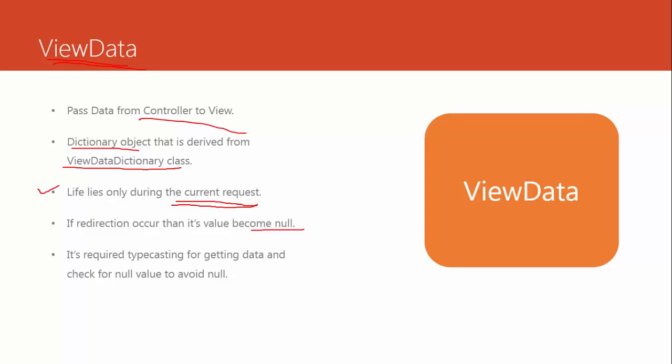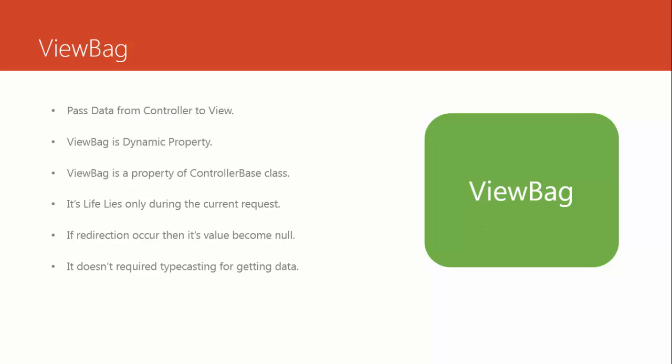Another important point about ViewData: it requires typecasting for getting data, and you must check for null values to avoid errors. In order to avoid errors, you need to perform typecasting when working with ViewData. That's a simple definition and declaration about ViewData.